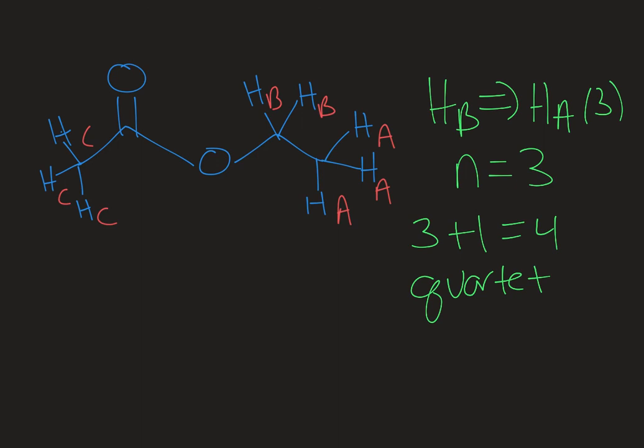The quartet is split into four peaks. It's symmetrical — for an even-numbered signal, the two middle peaks are the highest and the outside peaks are smaller. Note that the HAs aren't splitting each other, because equivalent protons can't split each other. HA is split by HB, but the HAs aren't split by themselves. If you have two protons labeled the same thing, there won't be any splitting even if they're next-door neighbors.